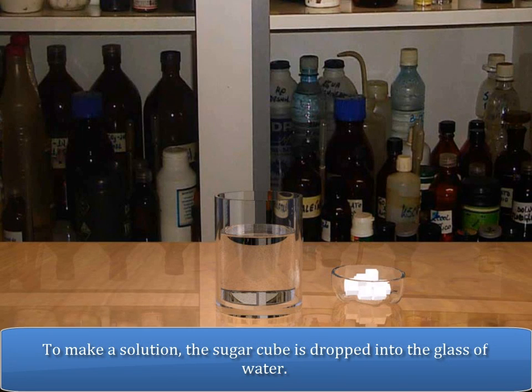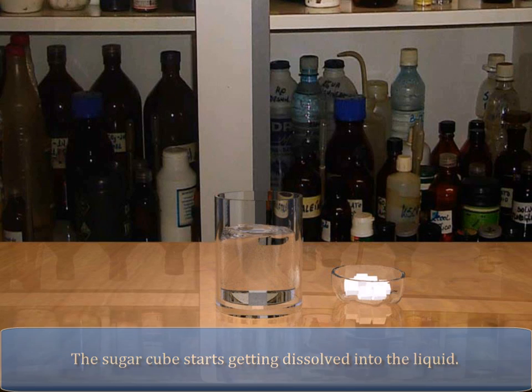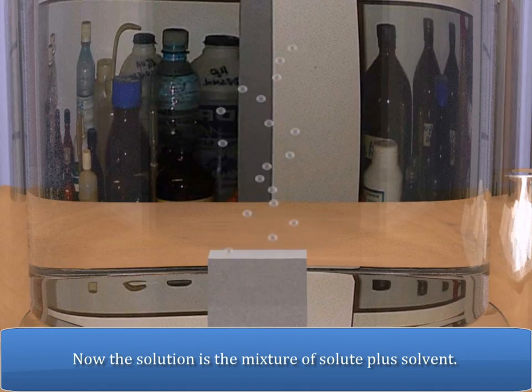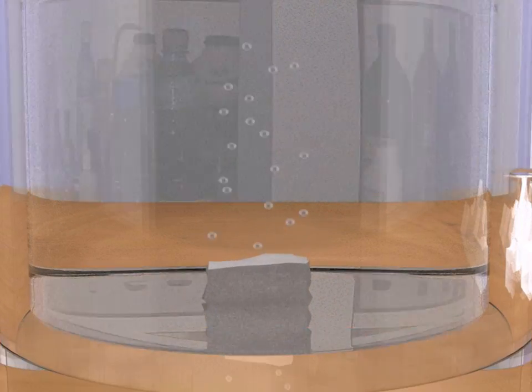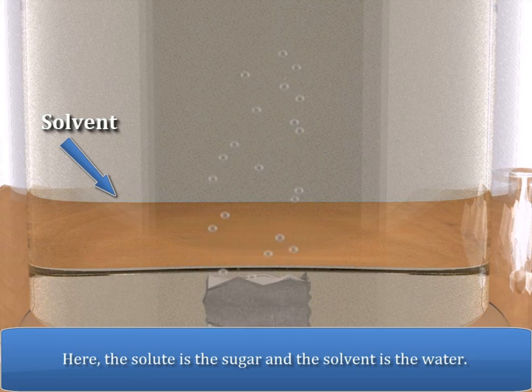To make a solution, the sugar cube is dropped into the glass of water. The sugar cube starts getting dissolved into the liquid. Now, the solution is the mixture of solute plus solvent. Here, the solute is the sugar and the solvent is the water.